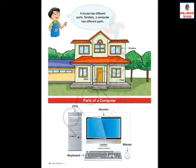All these things are present in our house as different parts. Together they make a complete house. If your house has no window or no door, then your house will not be complete. Similarly, a computer also has different different parts, and together they make one complete computer.